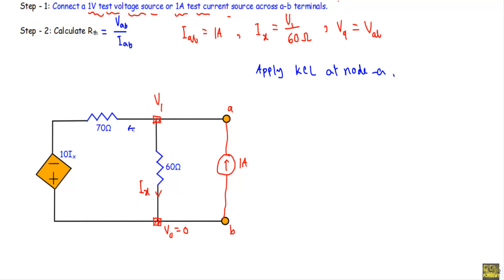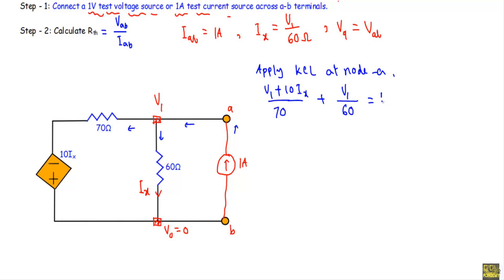The dependent current source is Ix, and Ix is the current flowing through the 60-ohm resistor. So in this circuit Ix equals V1 divided by 60. Note that V1 is exactly equal to the voltage across the A-B terminal, so Vab equals V1. Applying KCL at node A: the 1-ampere current is entering the node, so we get (V1 + 10·Ix) / 70 + V1 / 60 = 1.